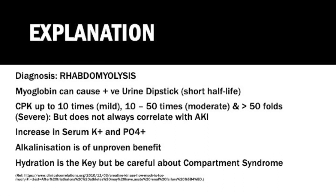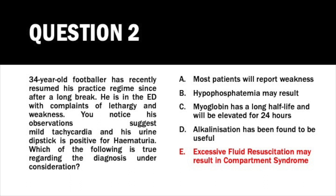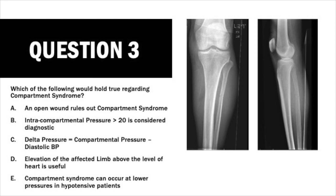Alkalinization is not useful in rhabdomyolysis. You will see an increase in potassium and an increase in phosphate — hyperphosphatemia, not hypophosphatemia. The treatment is hydration; hydration is the key. However, be wary that excessive hydration may lead to compartment syndrome. I'll put the link to the article from which this question was made in the description below.